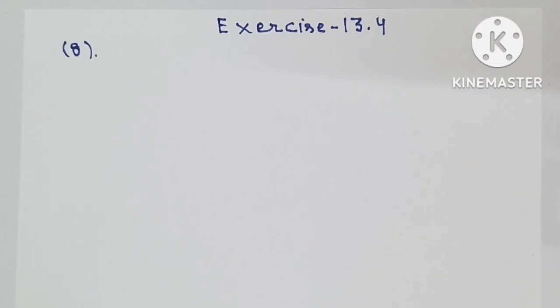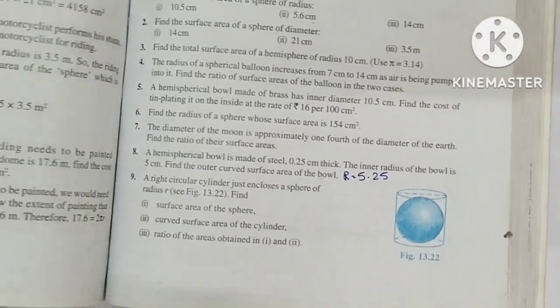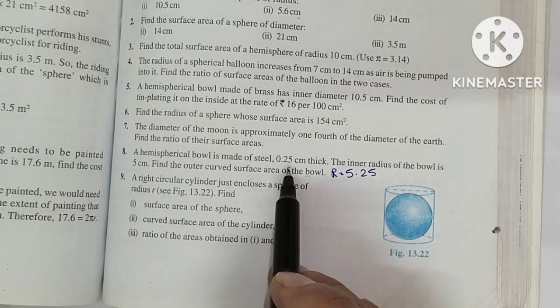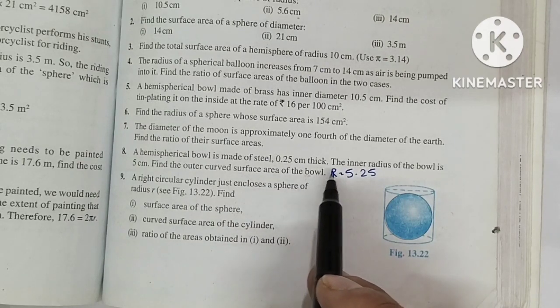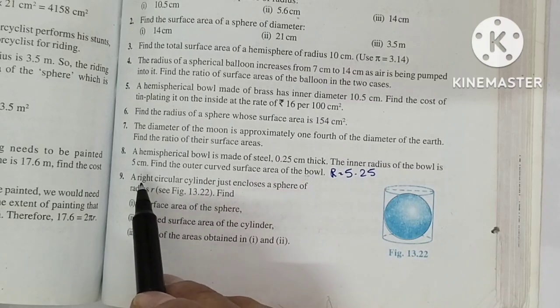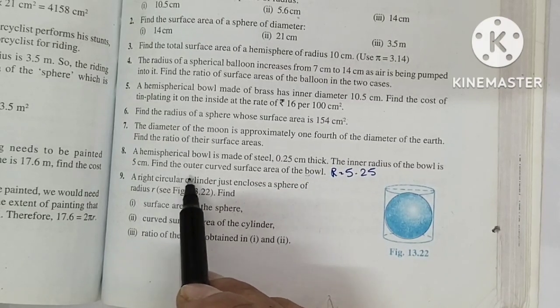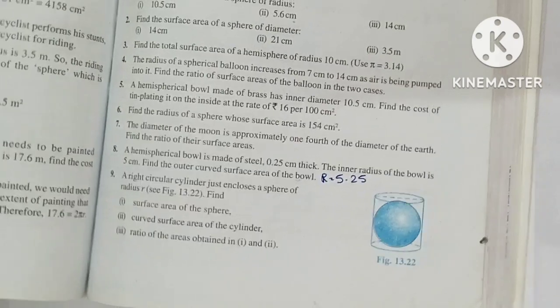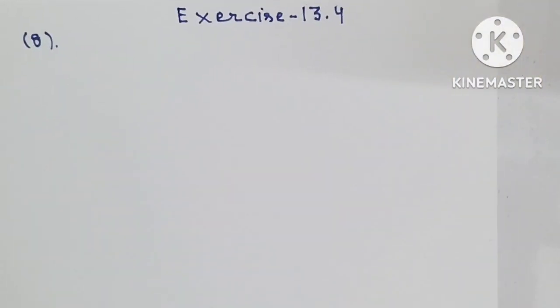Hello everyone, in this video I am doing question number 8 of Exercise 13.4, Chapter 13, Surface Area and Volumes of Class 9. This is a hemispherical bowl made up of steel 0.25 centimeter thick. The inner radius of the bowl is 5 centimeter. Find the outer curved surface area of the bowl. So let's start.